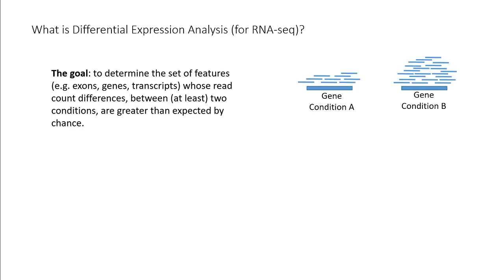In the context of mapped RNA-seq data, the goal of DEA is to determine the set of features—these are commonly exons, genes, or transcripts—whose read count differences between two or more conditions are greater than expected by chance.